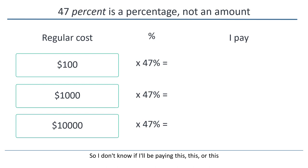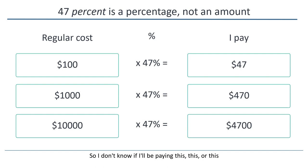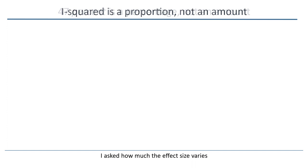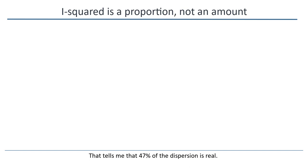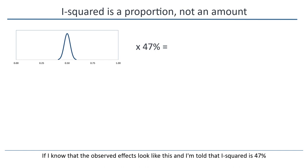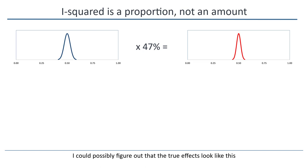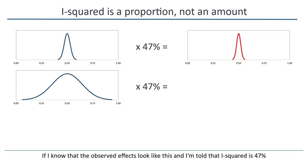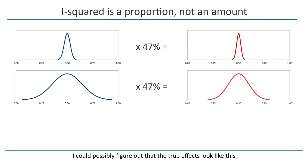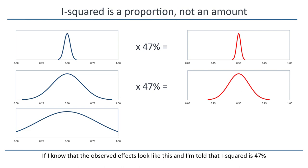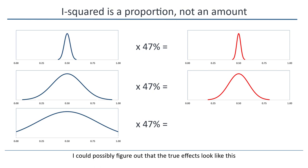There are two things we can say about the answer. First, the answer is informative — I know something now that I didn't know before. But the second thing is that the answer does not address my question. I still don't know how much I need to pay. I know that I'll pay 47% of the usual price, but I don't know if the usual price is this, this, this, or this, and therefore I don't know if I'll be paying this, this, or this. This scenario would be analogous to I-squared.